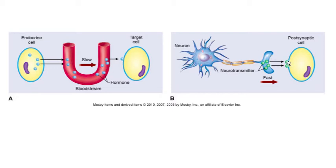Not all cells are target cells, but all of them will be able to ostensibly receive this signal. With neurotransmitters, the only cell that is contacted is the postsynaptic cell — the cell that's on the other side of the synapse.